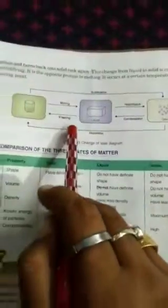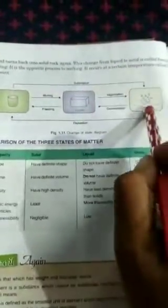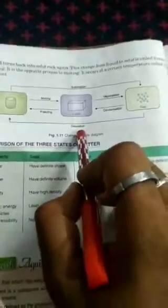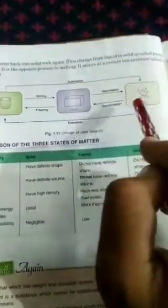This chart will help you understand the various processes. Solid to gas directly is called sublimation; gas to solid directly is called deposition. Solid to liquid is called melting; liquid to solid is called freezing. Liquid to gas is called vaporization; gas to liquid is called condensation. This chart is very important.